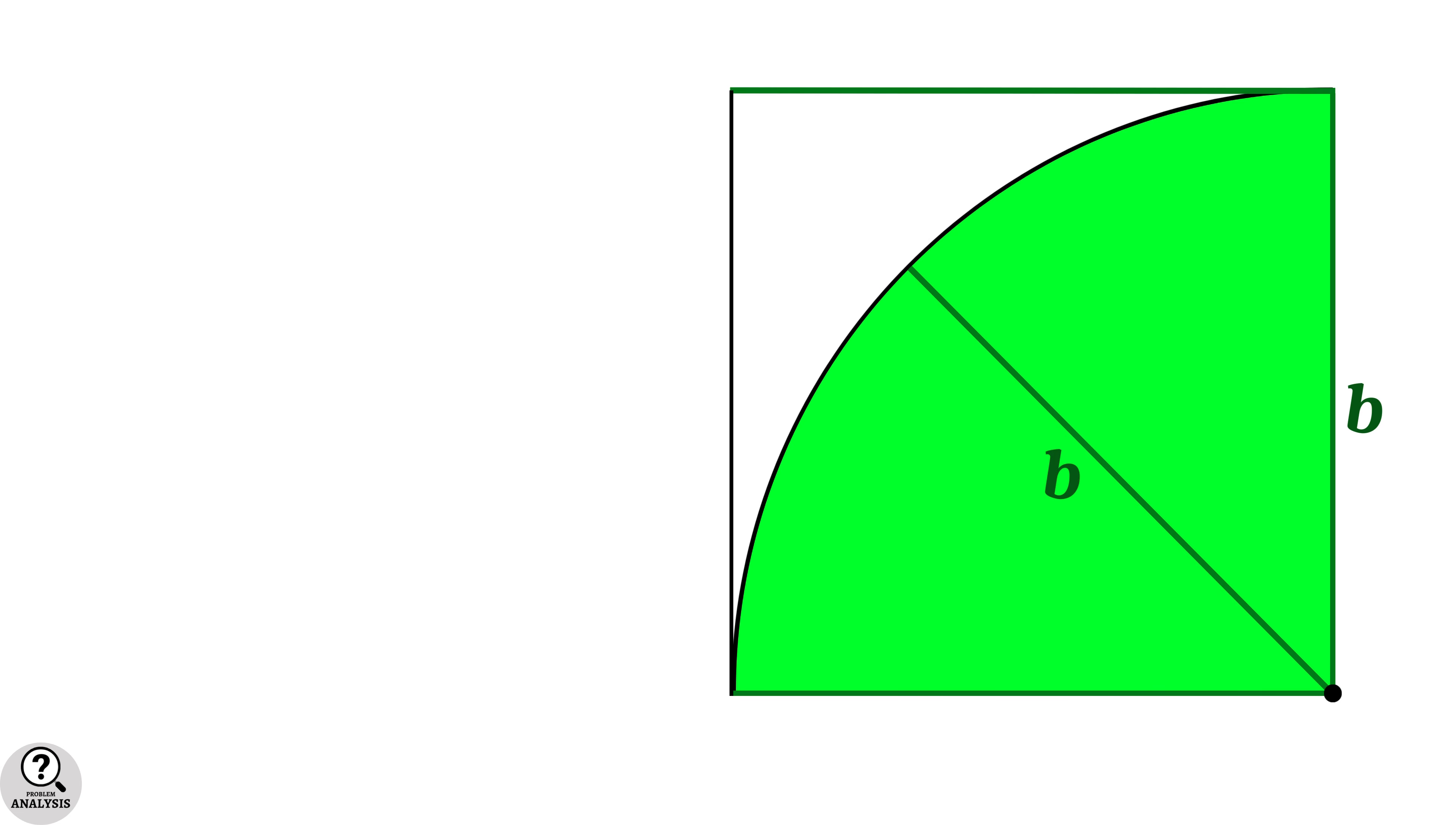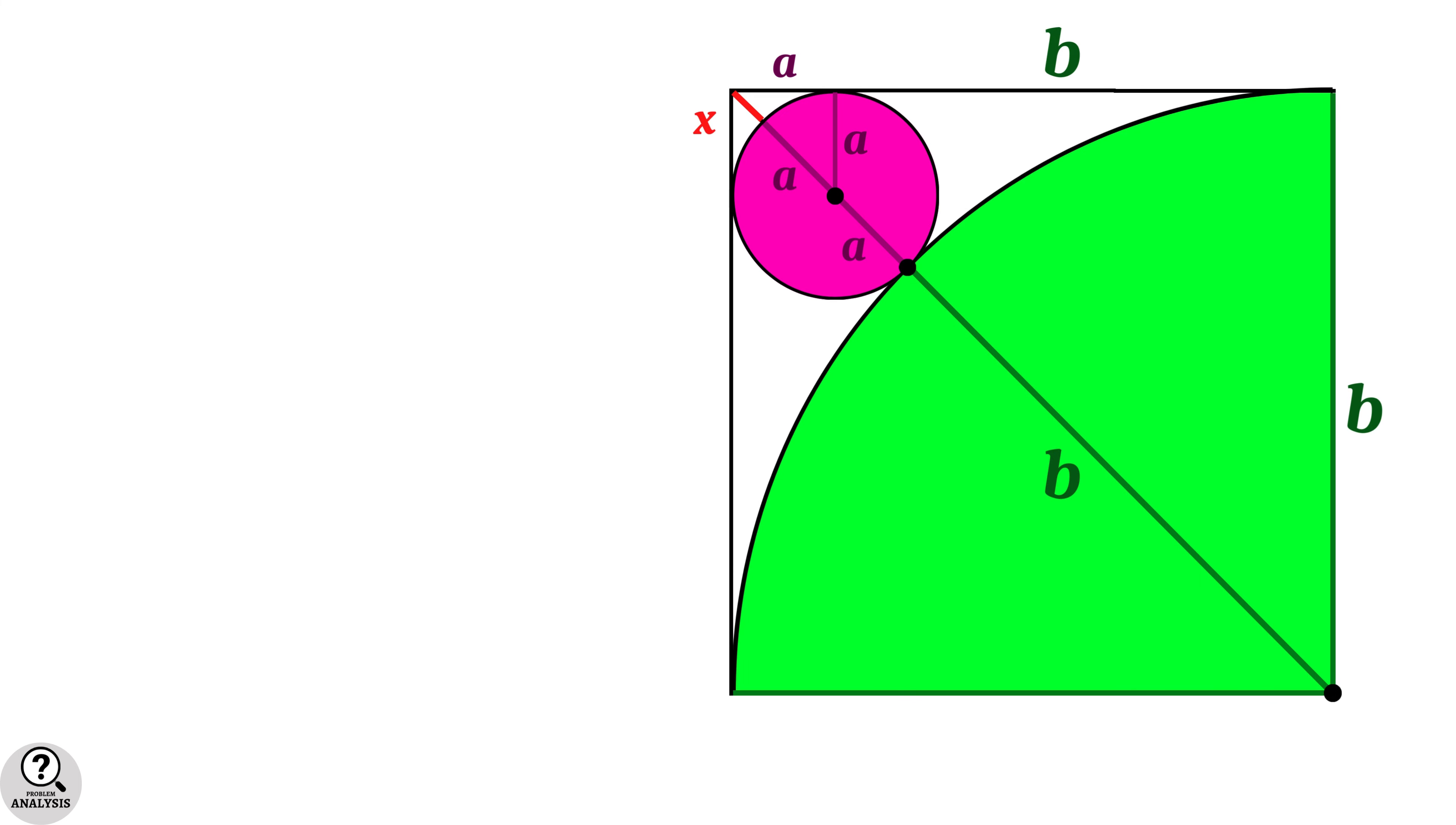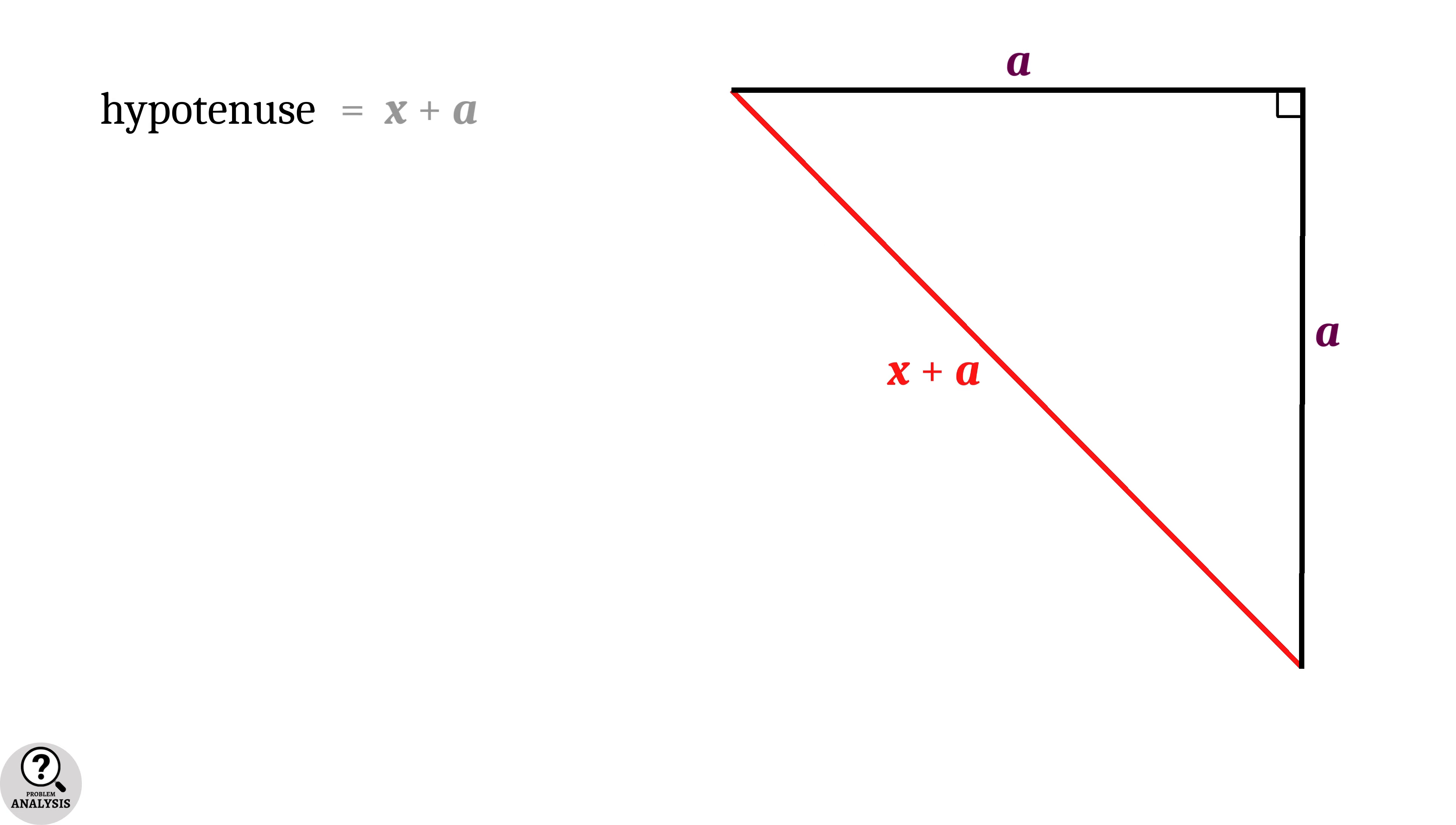Now look at the top edge of the square. Length of this edge is b units, same as the radius of green circle. Now come back to the figure and consider this pink circle only. Then this small part of the top edge is a units, same as the radius of pink circle. Noting all these things, again come back to the figure and consider this small right triangle here.